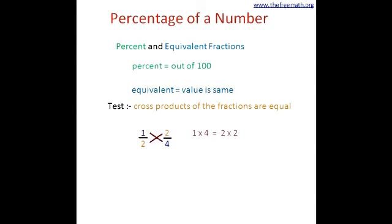Let's take a look at an example: 1 over 2 and 2 over 4. The cross product means the numerator of one fraction multiplied by the denominator of the second fraction. So 1 multiplied by 4 equals 4, and 2 multiplied by 2 equals 4. Since both cross products are equal, 1 over 2 and 2 over 4 are equivalent fractions.